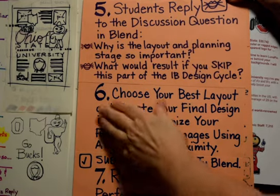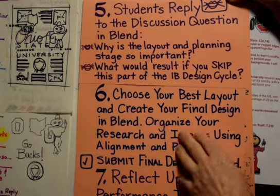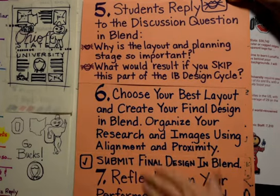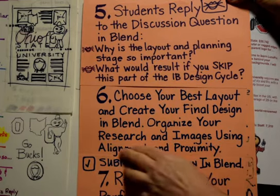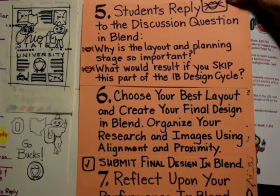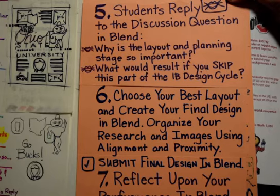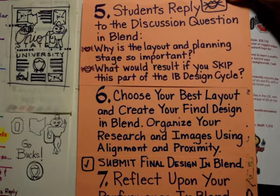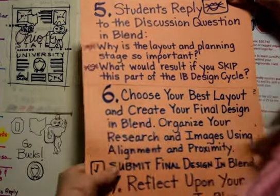Number six: choose your best layout and create your final design in Blend. You're going to organize your research and your images using alignment and proximity. I think these are the two most powerful design methods that you will use on everything that you design from this point forward. And you're going to submit your final design in Blend.